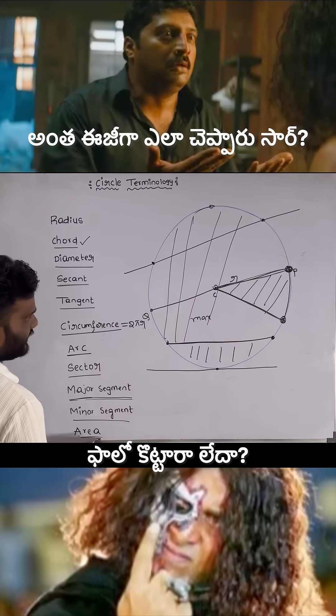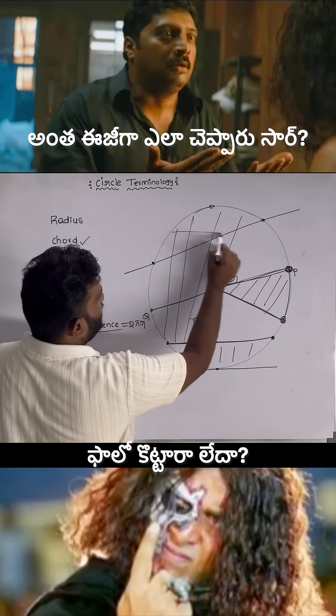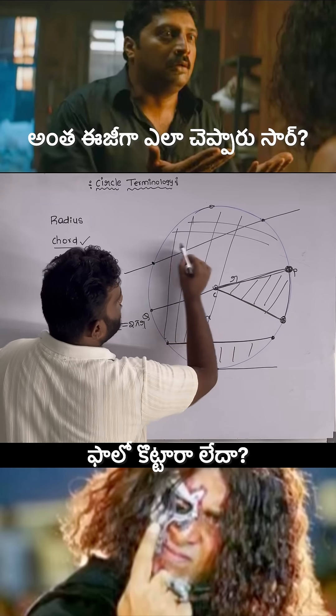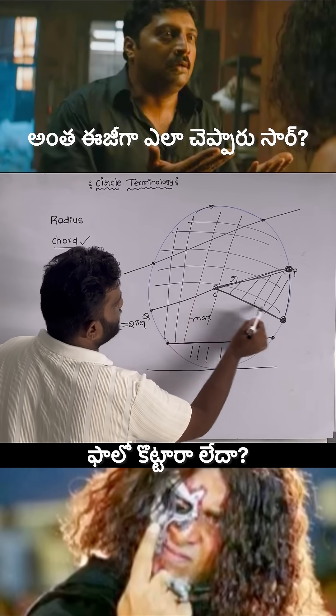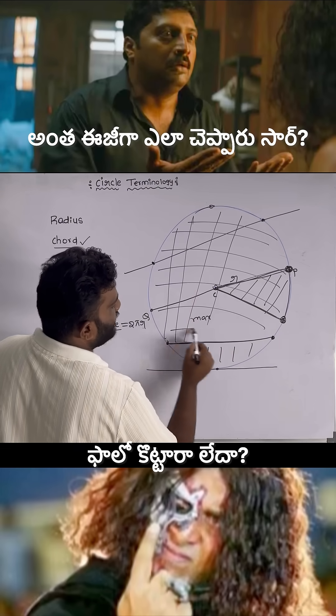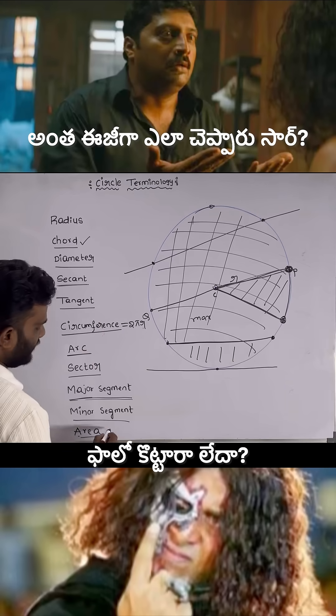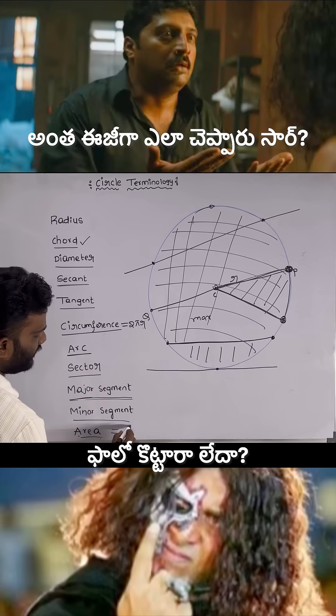What is area? The complete space inside the circle is called area, and this can be calculated using the formula πr².